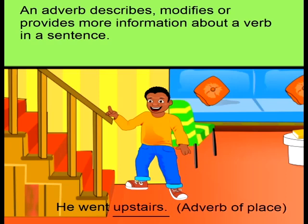For example, he went upstairs. Upstairs is an adverb of place — where did the boy go? He went upstairs.